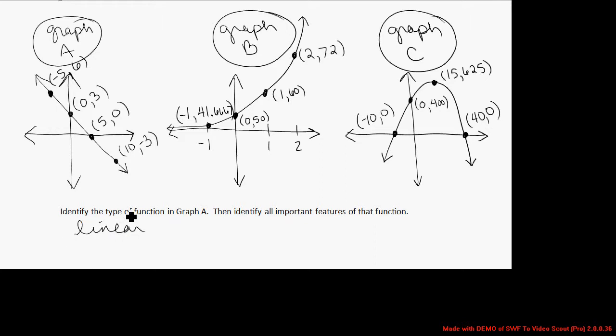So the first thing I would say is a linear function. It's a straight line. I know that it's a decreasing linear function because as you walk from left to right, the graph goes down.